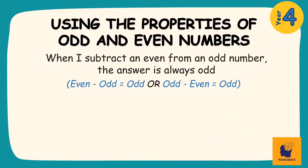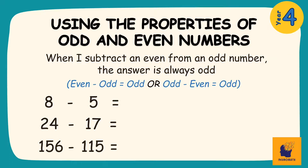The last thing we need to understand is that when I subtract an even from an odd number, the answer is always going to be odd. What this means is that when I take an odd number from an even, or an even from an odd, my answer will always be an odd number. So I could have problems like 8 take away 5, 24 take away 17, or 156 take away 115. Because an odd is being taken from an even, or an even is being taken from an odd, my answer will be an odd number.